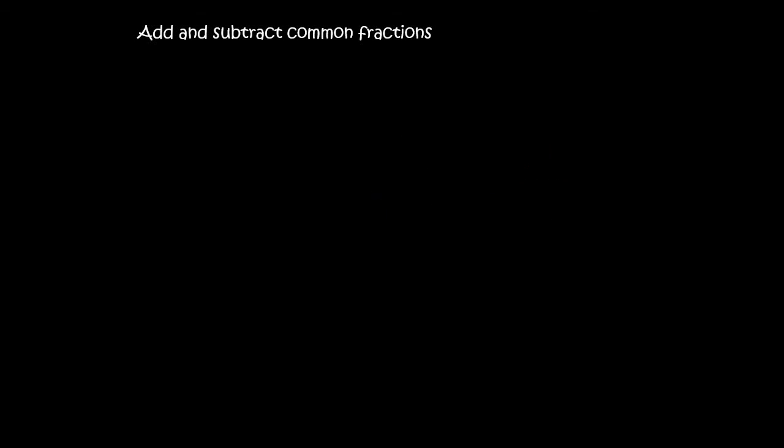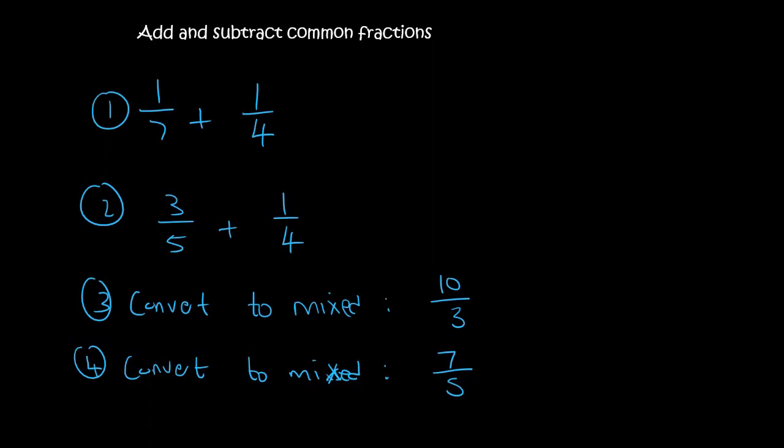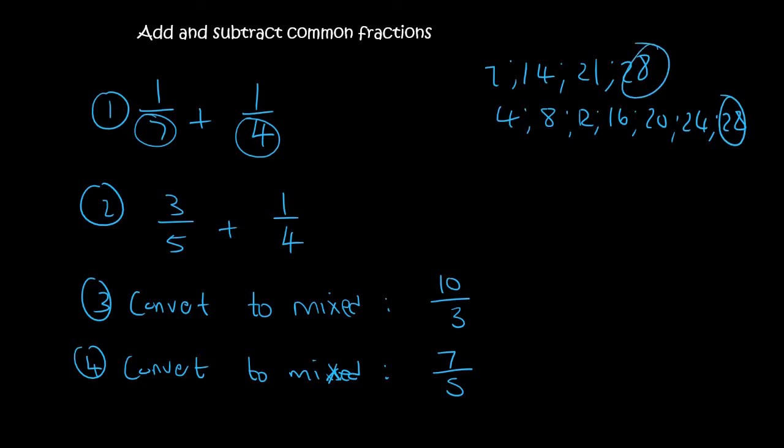Let's do a last little practice activity. And then we are done with this lesson. 1 over 7 plus 1 over 4. So the denominators are not the same. And so if you count in 7s, you'd get 7, 14, 21, 28. If you count in 4s: 4, 8, 12, 16, 20, 24, 28. So 28 is the number that you want. So to make 7 go to 28, you're times it by 4, but what you do to the bottom, you do to the top. To make 4 go to 28, you're times it by 7, and what you do to the bottom, you do to the top. And so that's going to give you 4 over 28 plus 7 over 28, and that equals 11 over 28.